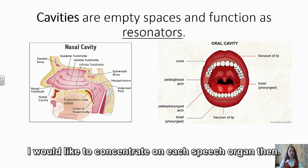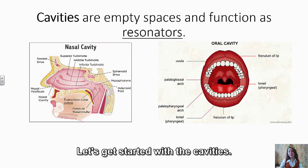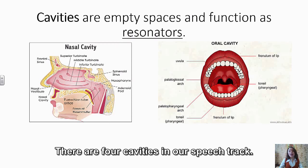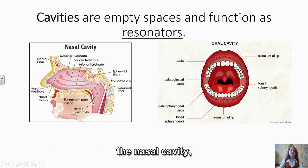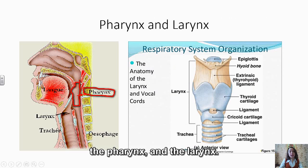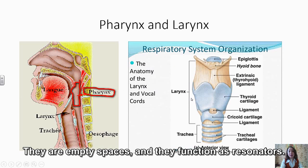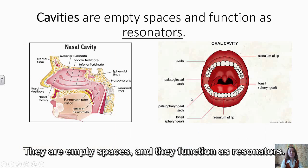I would like to concentrate on each speech organ. Let's get started with the cavities. There are four cavities in our speech tract: the oral cavity or mouth cavity, the nasal cavity, the pharynx, and the larynx. They are empty spaces and their function is as resonators.